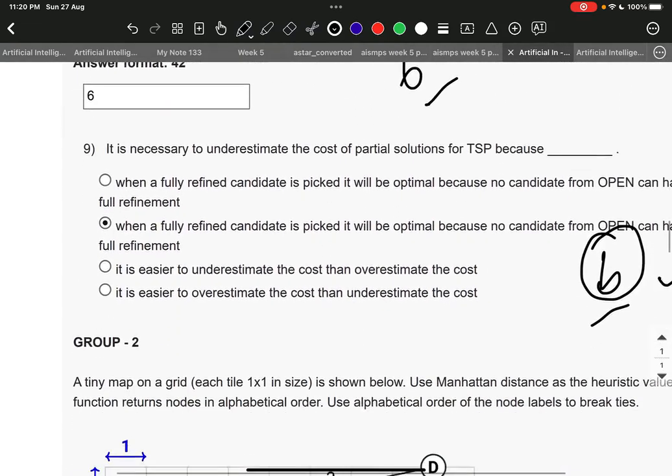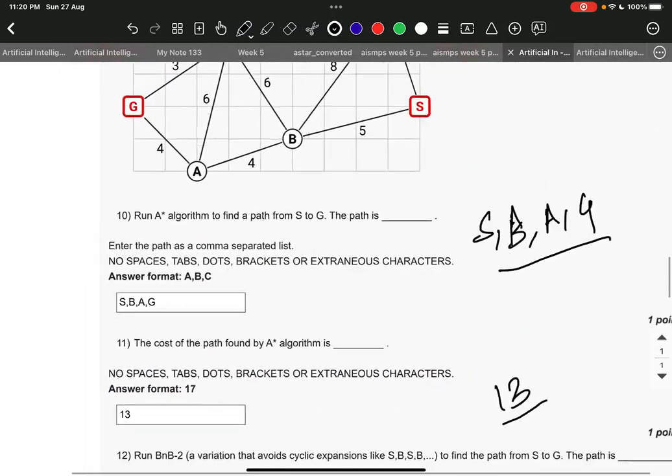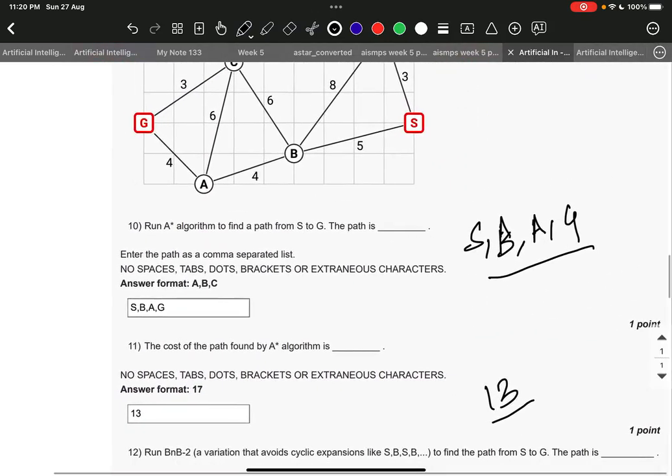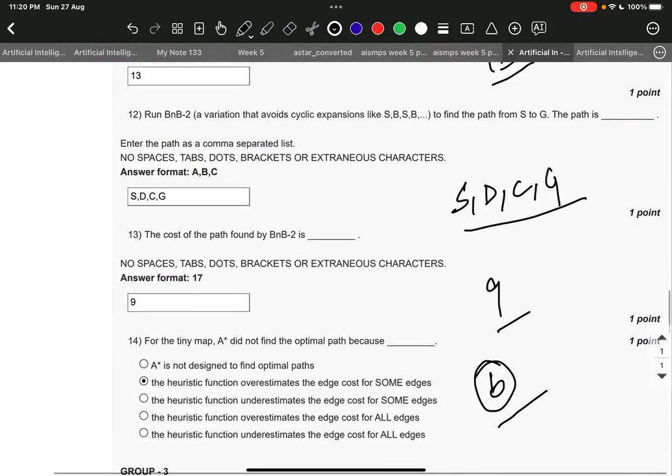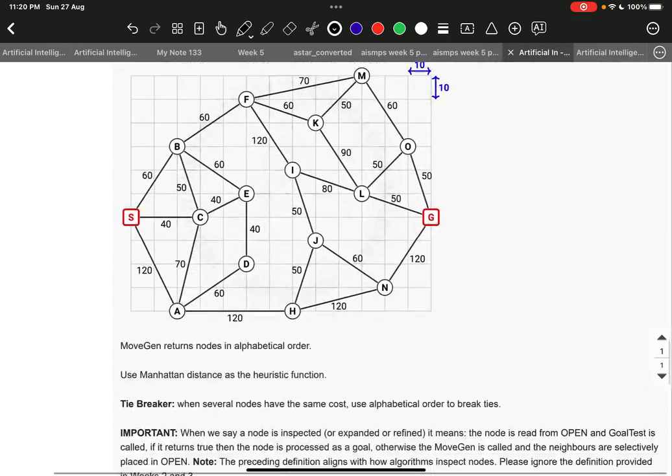Next is B, then S, B, A, G, next 13, next S, D, C, G, next 9, next B.